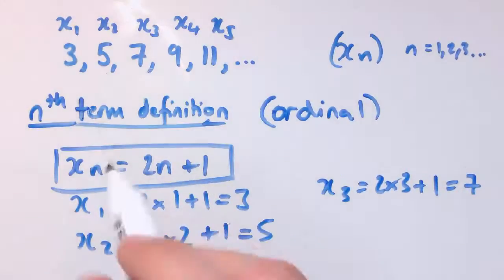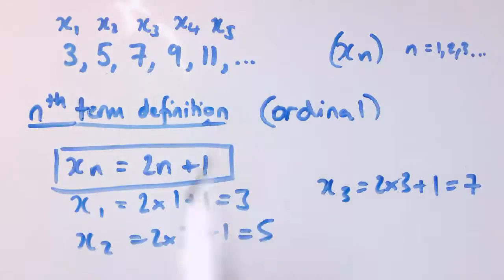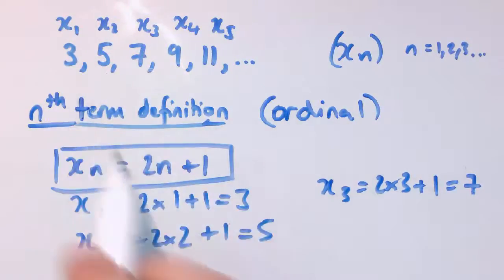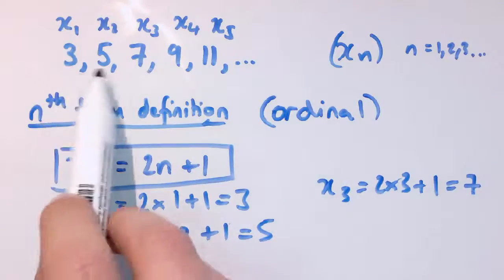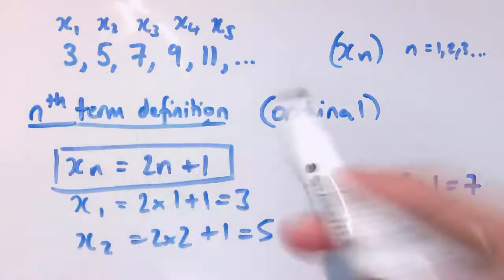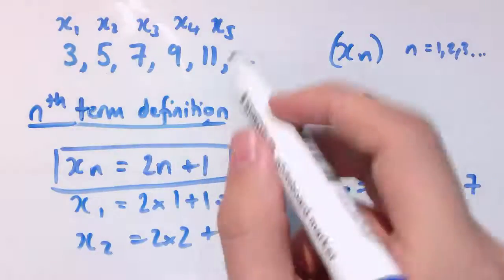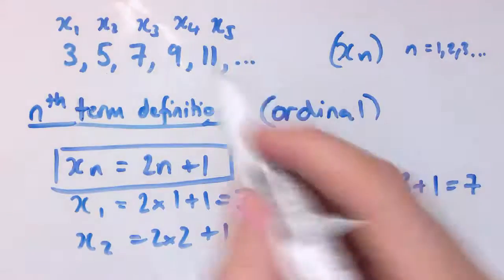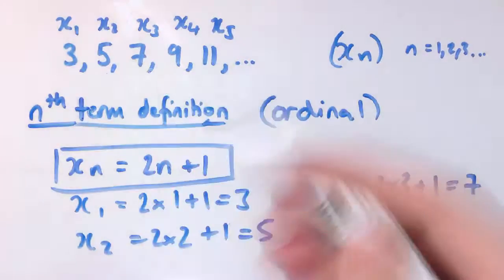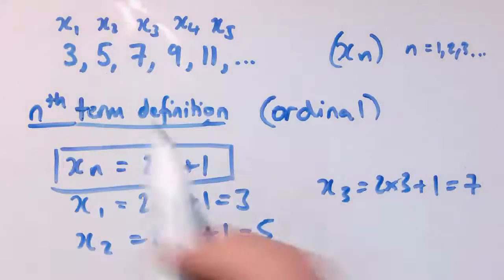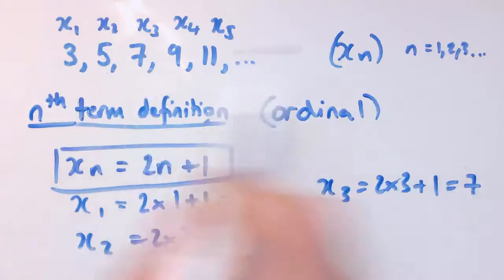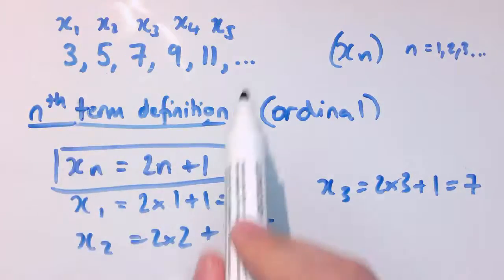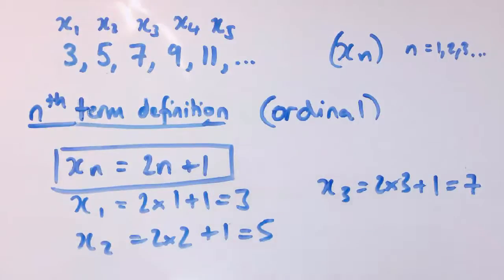This nth term definition is much better than just writing down the sequence, because it really does tell us it's a sequence going up in 2s and starting at 3. Just writing the terms, the next number might be something other than 13 — it could be 100 or a million. I could make up a more complicated formula that would produce a sequence like that. So the sequence is not totally determined mathematically unless we've got a definition like this.